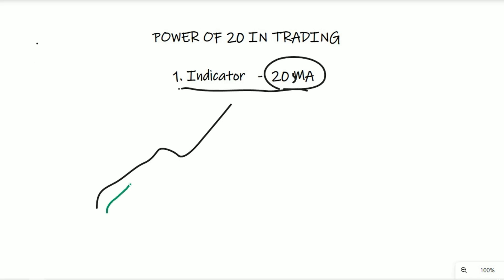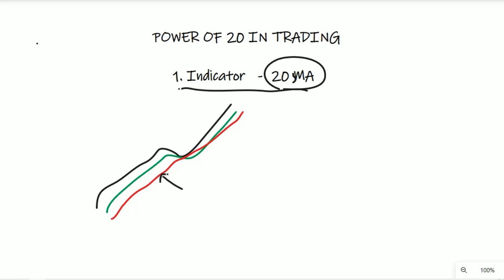The green line is the 20 EMA. Where is 20 EMA on the chart? In all cases, the market is moving toward the 20 EMA. I will check this out on the 20 SMA as well.